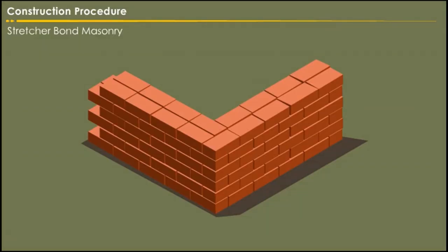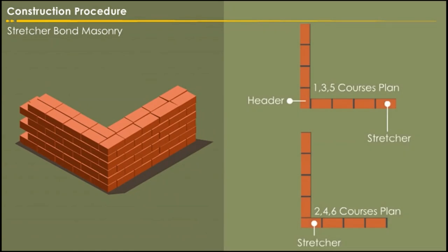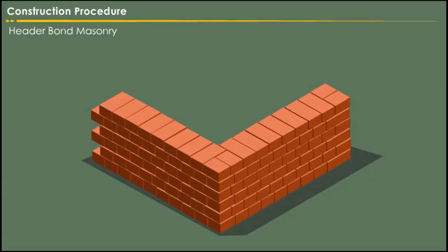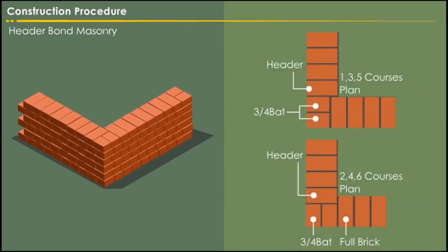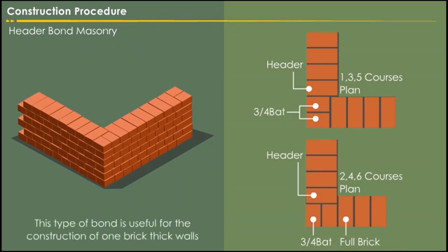In stretcher bond masonry, all the bricks are arranged in stretcher courses; however, care should be taken to break the vertical joints. Originally it was used for half brick thickness walls. In header bond brick masonry, all the bricks are arranged in header courses. This type of bond is useful for the construction of one brick thick walls.